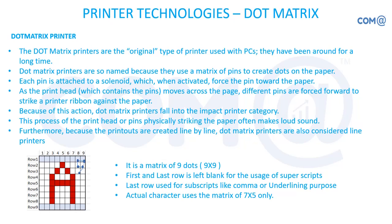We'll move on to the dot matrix printer, which is the first model available in the market and is still found in most places. It is called dot matrix because it prints with dots and the characters are formed based on a matrix structure — like three by three, four by four, five by five. Because of that, we call it a dot matrix printer.